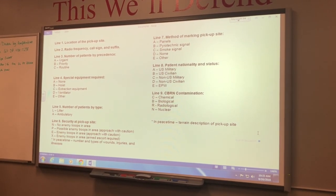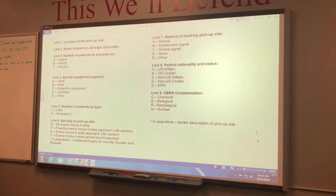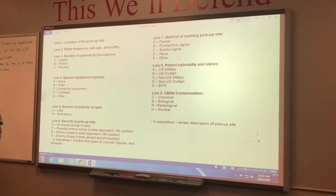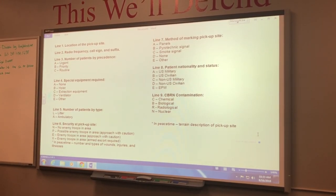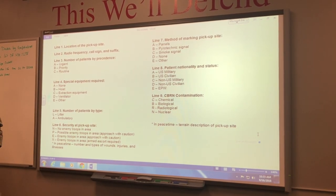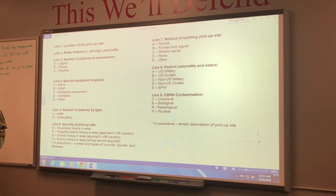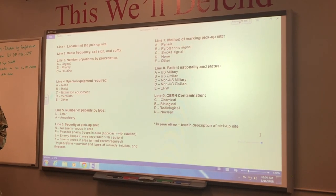Line six is security of the pickup site. November no enemy troops in the area means it's secured. Papa possible enemy troops in the area means you haven't seen enemy yet or you've engaged enemy and you think it's clear but you're not sure.